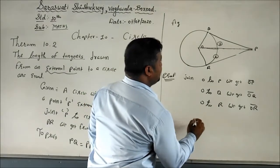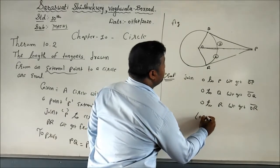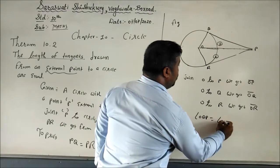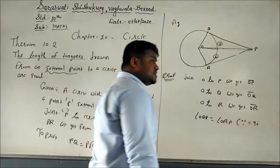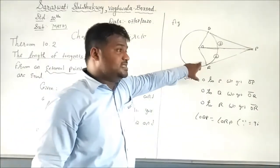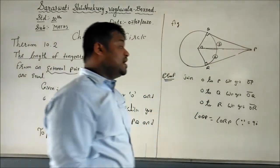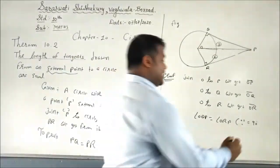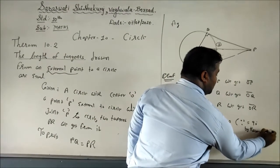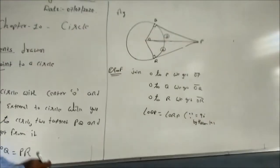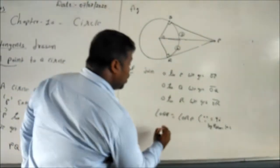So we can write: angle OQP = angle ORP = 90 degrees, by Theorem 10.1. This is because the radius at the point of contact is always perpendicular to the tangent. Also, OQ = OR, since both are radii of the same circle.